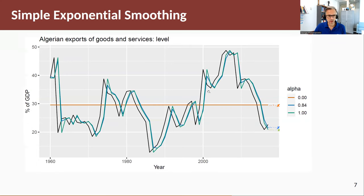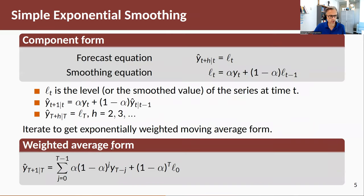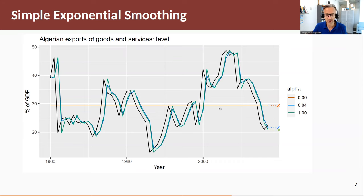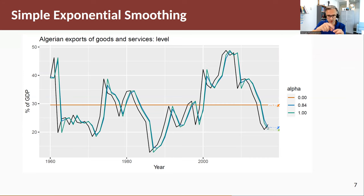Here are fitted values with three different alpha values. If alpha equals zero, all terms in the weighted average form cancel except the initial value, and minimizing sum of squares gives the average — so everything in the past matters equally. If alpha equals one, we get the naive forecast. The optimal alpha of 0.84 means the last observation gets weight 0.84, the one before that gets 0.84 times 0.16, and so on — so the weights decay quite quickly.